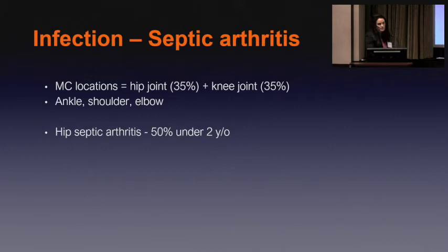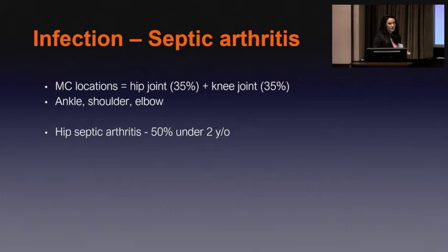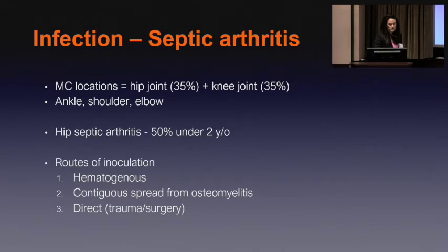With septic arthritis, the most common locations are going to be the hip and the knee, and most hip infections are going to be in kids under two years of age. We also see it in the ankle, shoulder, and elbow particularly. You get this infection usually via hematogenous spread. It can be contiguous from a metaphyseal osteomyelitis, and a bit more unusual is direct inoculation or contamination from either trauma or surgery.